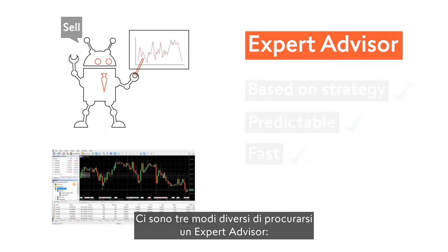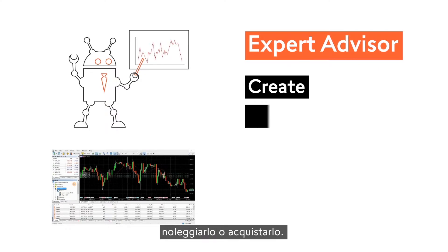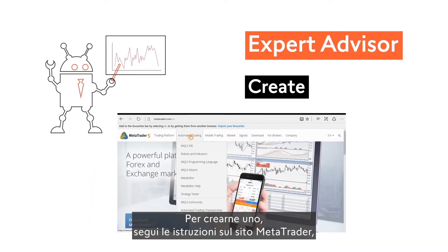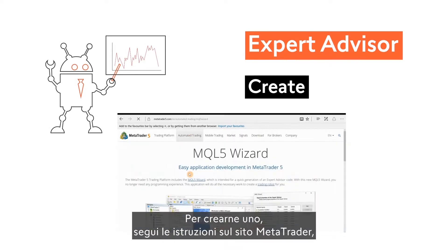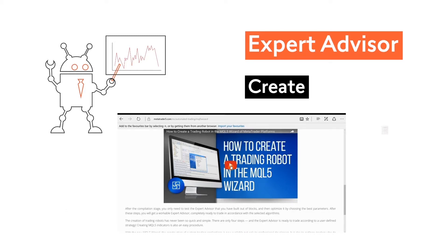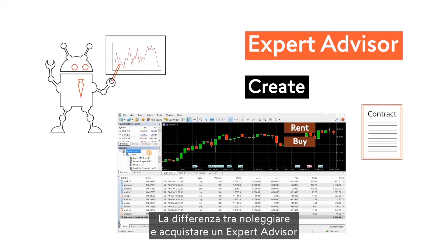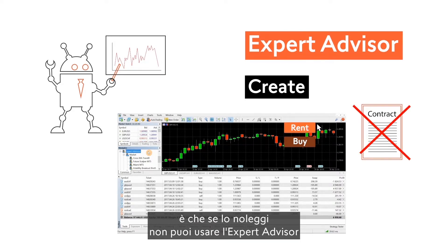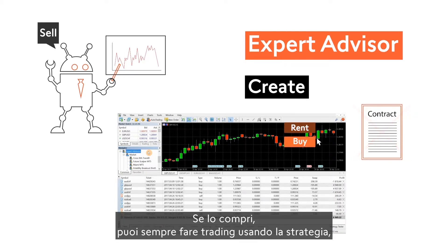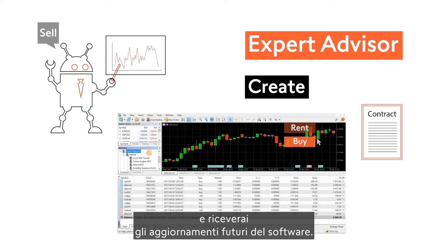There are three different ways to obtain an expert advisor. You can create one yourself, rent one, or buy one. To create one, follow the instructions on MetaTrader's website or hire a freelancer to automate your ideas. The difference between renting and buying is that if you rent, you cannot run the expert advisor after your contract expires. If you buy, you can always trade using the strategy and will receive updates to the software in future.